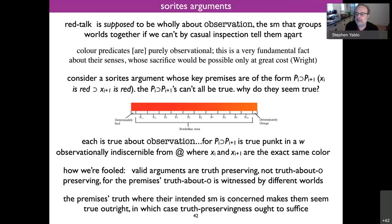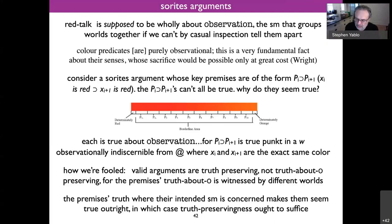Here's the right quote: color predicates are purely observational — it's a very fundamental fact about their sentences, whose sacrifice would be possible only at great cost. These are principles almost like regulative ideals for how we're supposed to understand the word. Consider a Sorites argument whose key premises are of the form: if Pi then Pi+1, which is short for 'if Xi is red, then Xi+1 is red.'